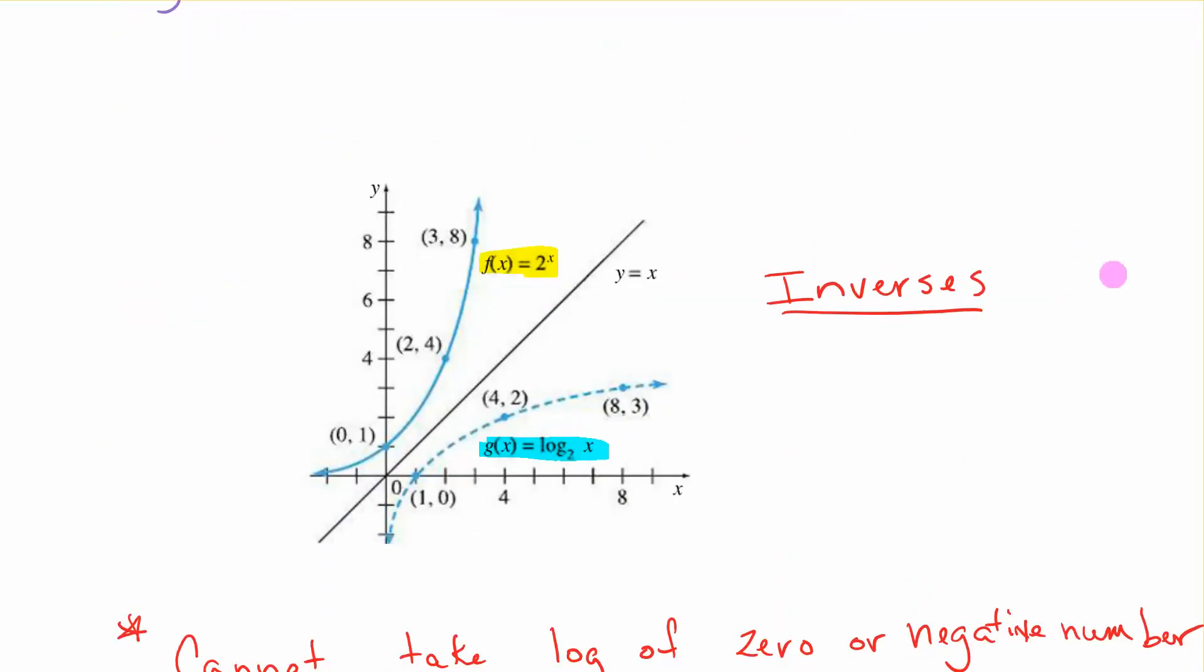Let's look at this picture. It shows you f of X equals 2 to the X. That's an exponential function. Log base 2 of X over here. Remember that inverses have to be symmetrical about Y equals X. So these are definitely inverses.